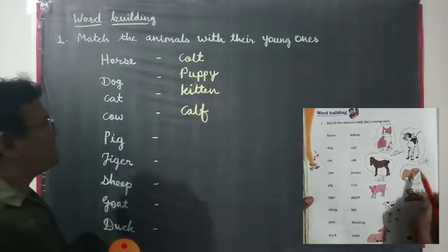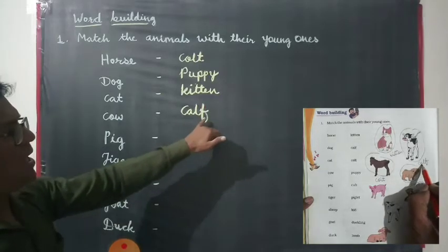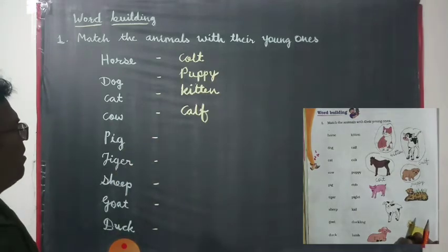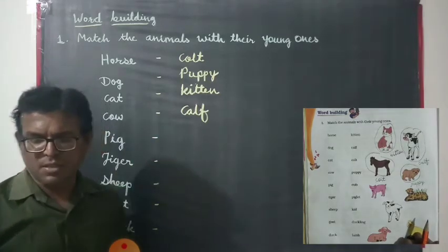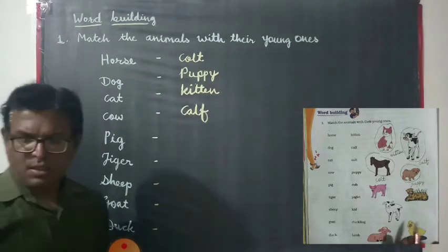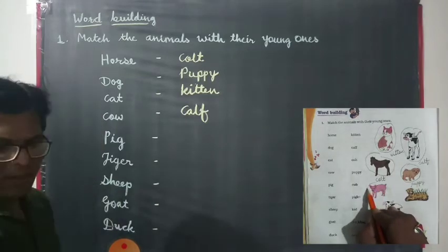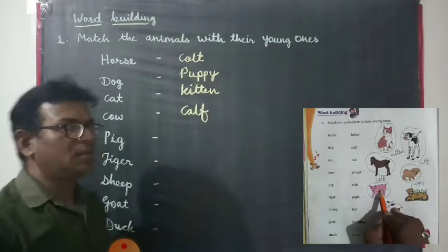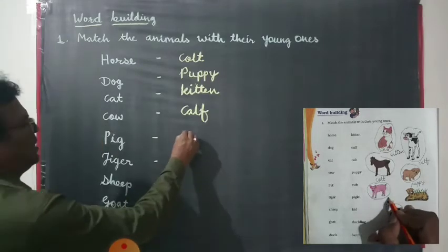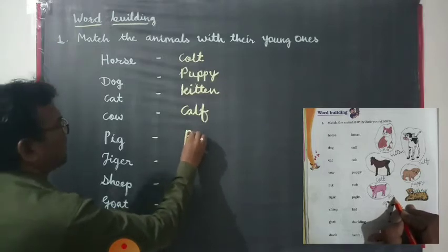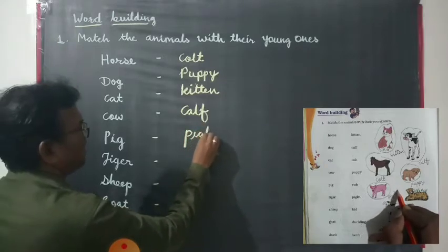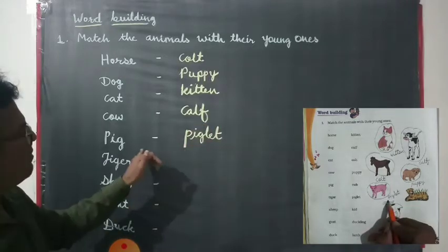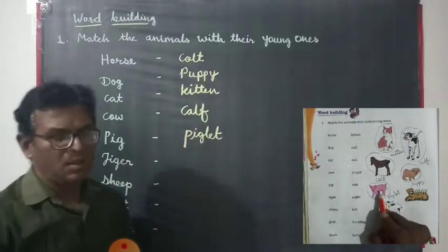The spelling is C-A-L-F. Now, the young word of pig — we find out the young ones of pig. Yes, this is the picture of the young ones of pig, and that is called piglet — P-I-G-L-E-T. Yes, the young word of pig is called piglet.